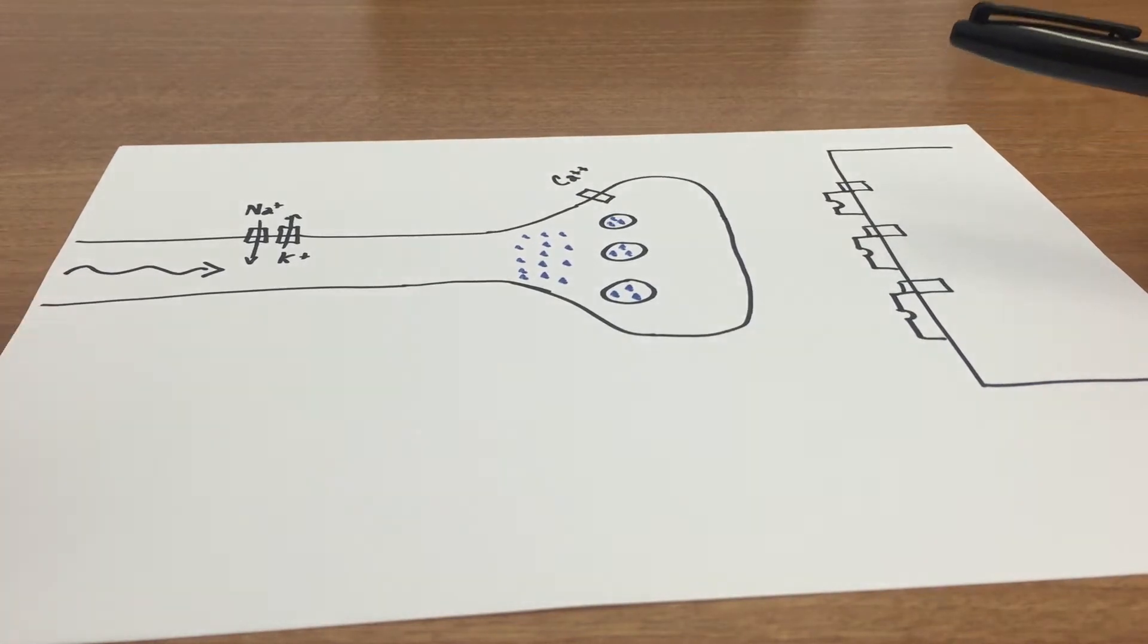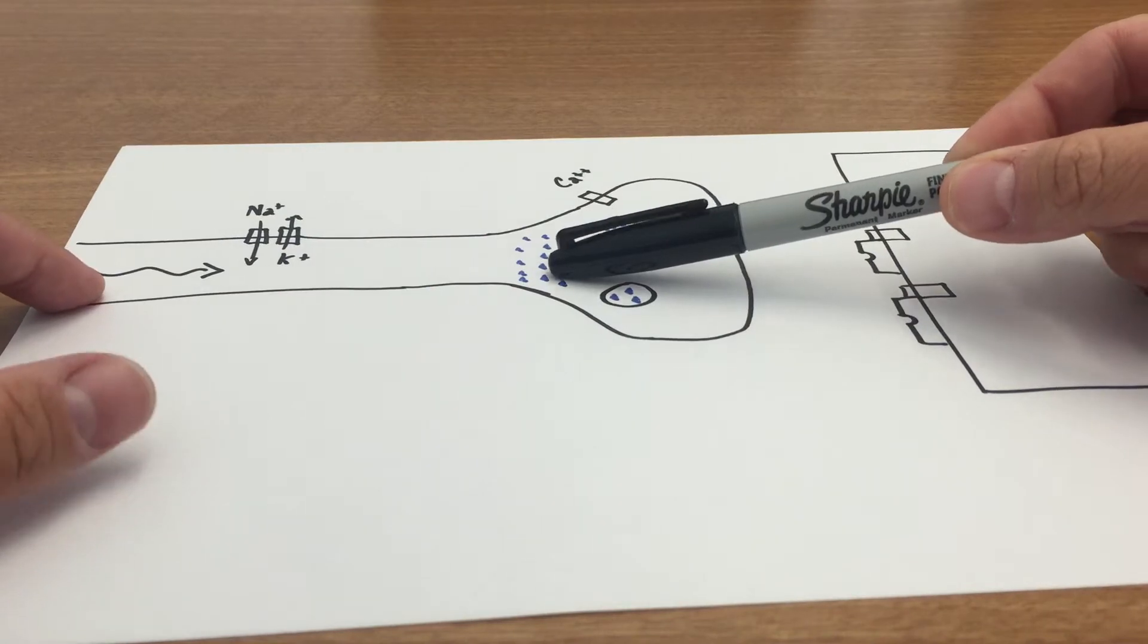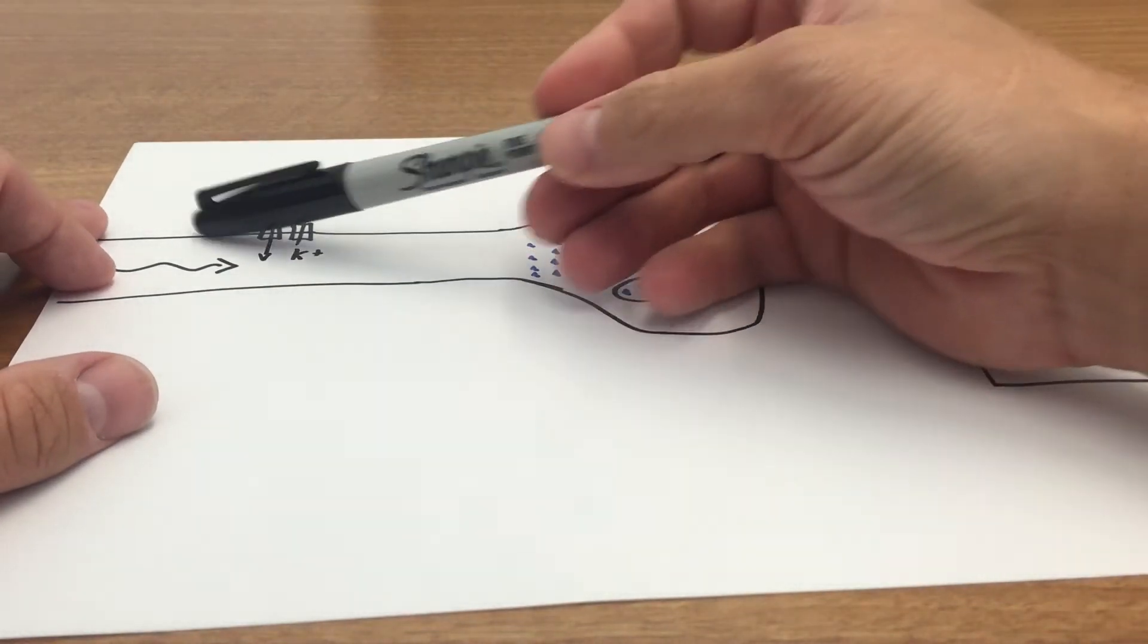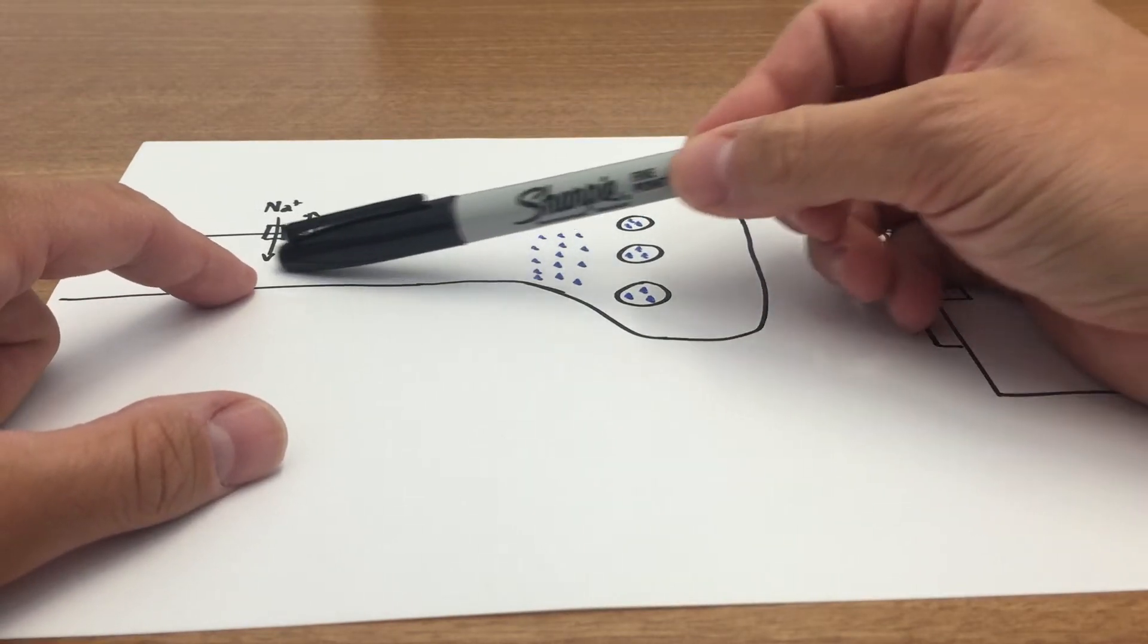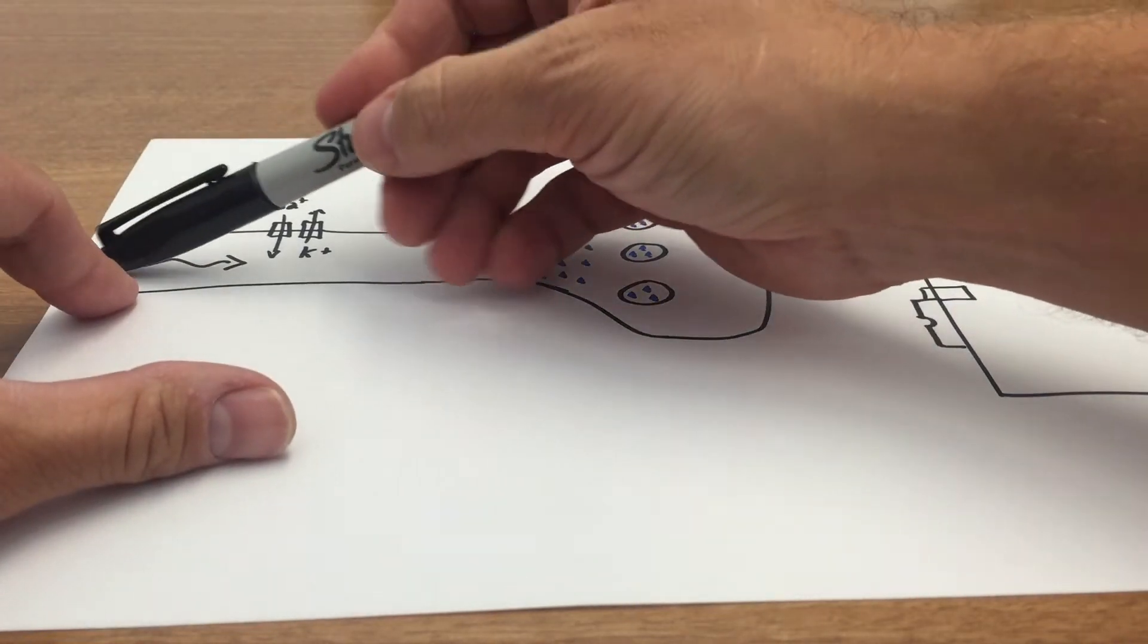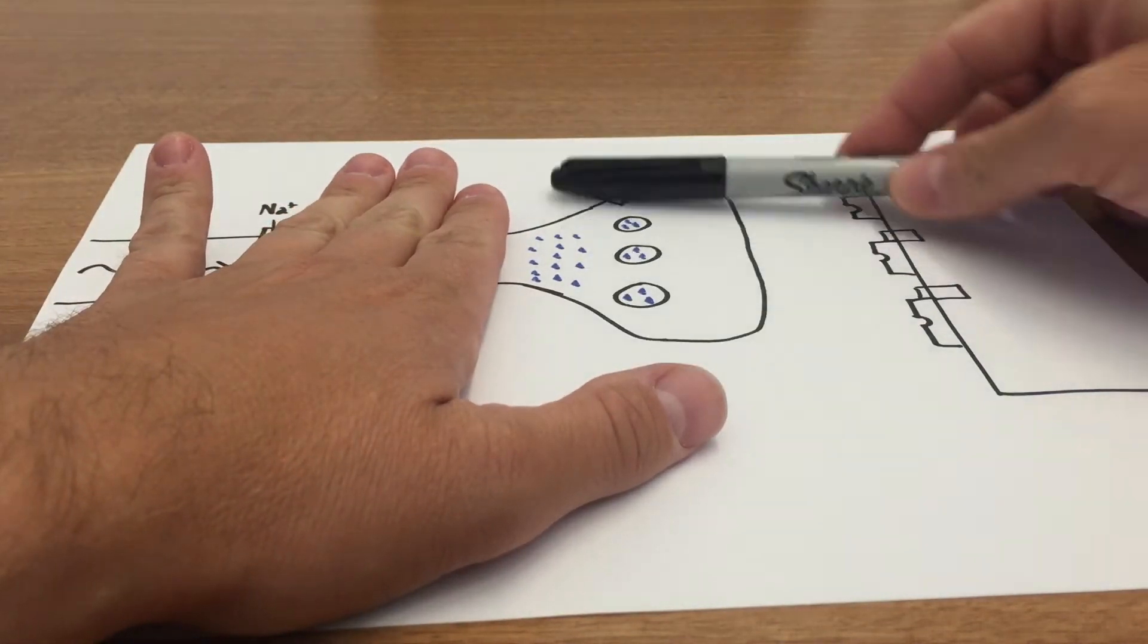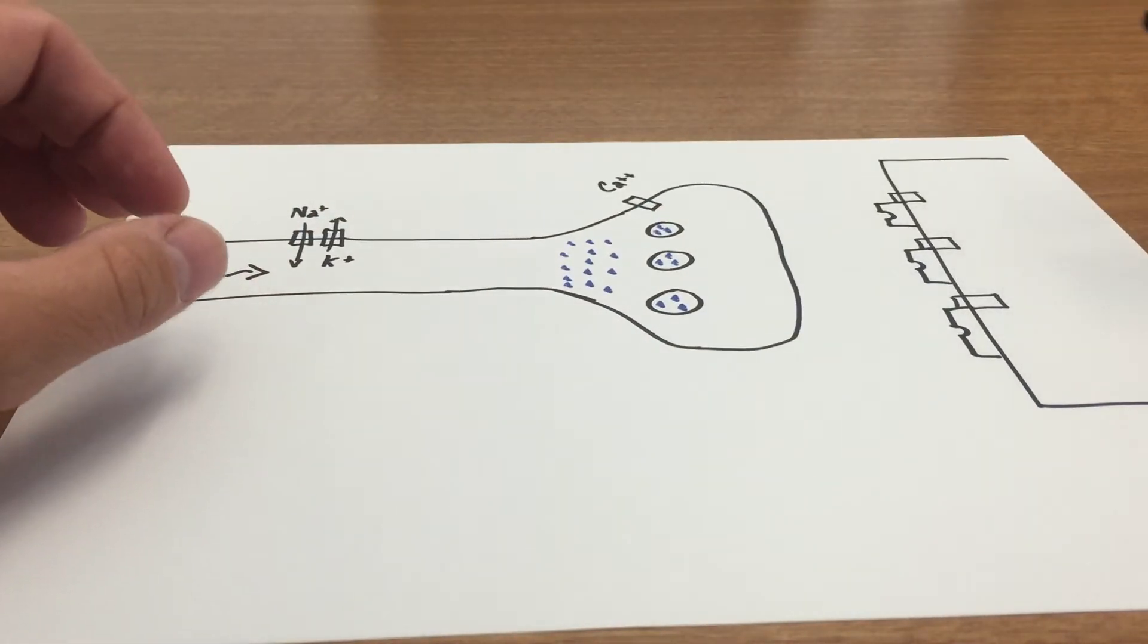So the general picture that we've talked about already is you have this wave of depolarization that moves down the axon. Obviously this is going to be motor, it's going to be myelinated, we're going to have saltatory conduction, but you can just imagine sodium coming in, potassium rushing out, and of course the membrane is depolarizing. Then that wave of depolarization makes its way into the terminal part of the axon here, and this is where I want to spend a little more time talking about what is exactly going on.